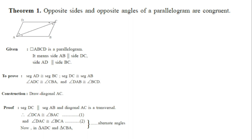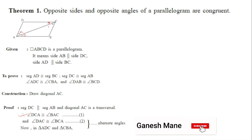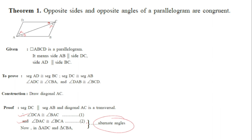As it is a parallelogram, DC is parallel to AB. If DC is parallel to AB and AC is their transversal, then angle DCA and angle BAC are alternate angles. Since two parallel lines have congruent alternate angles, angle DCA is congruent to angle BAC. Similarly, angle DAC and angle BCA are also alternate angles and are congruent. We call these equation 1 and equation 2, with the reason being alternate angles.